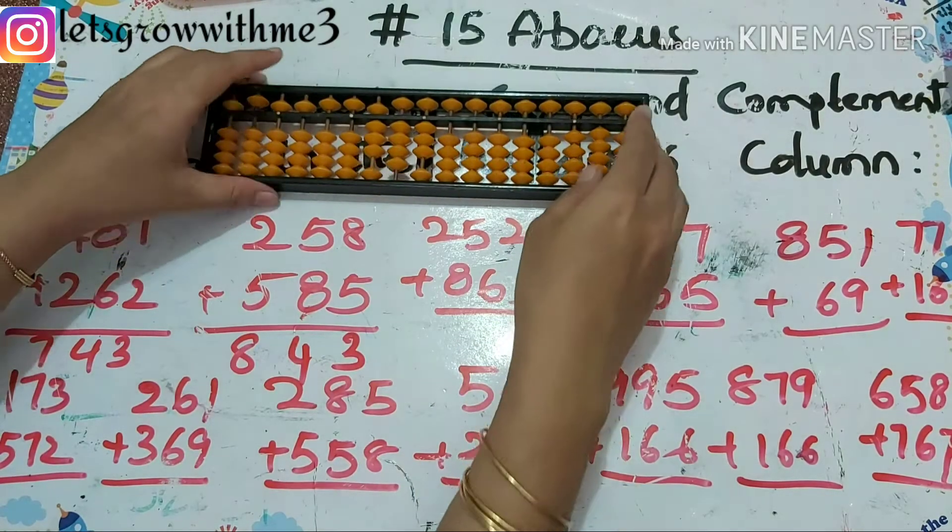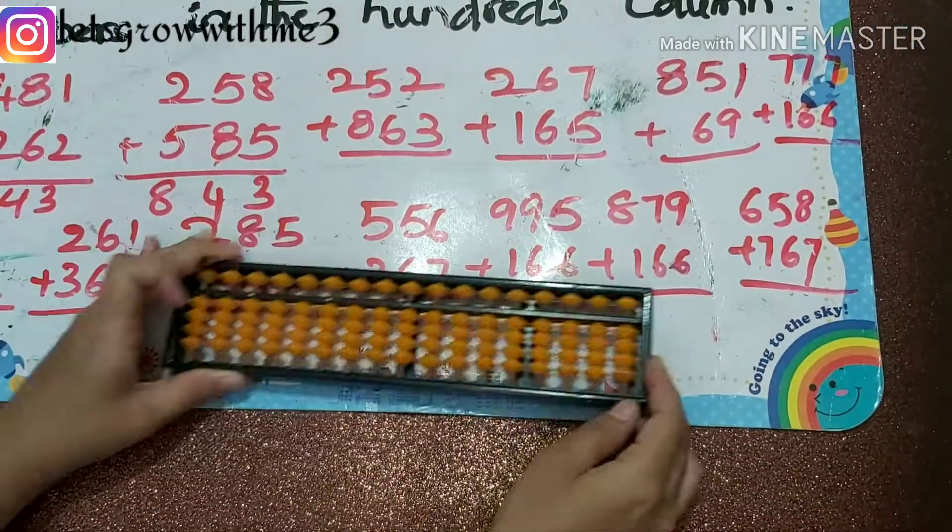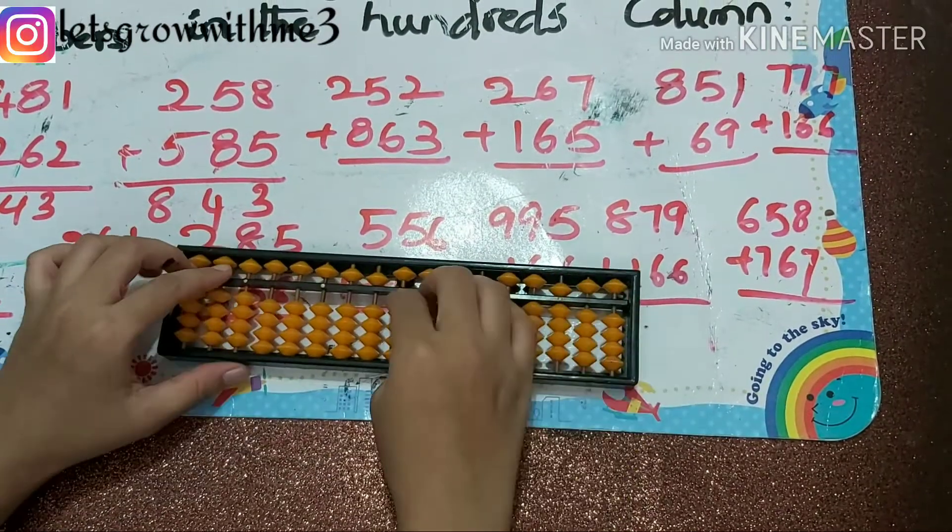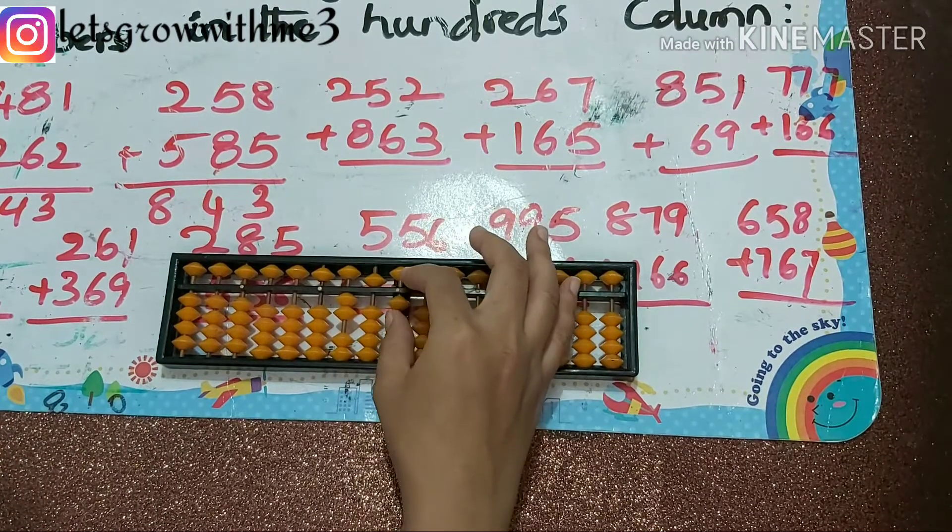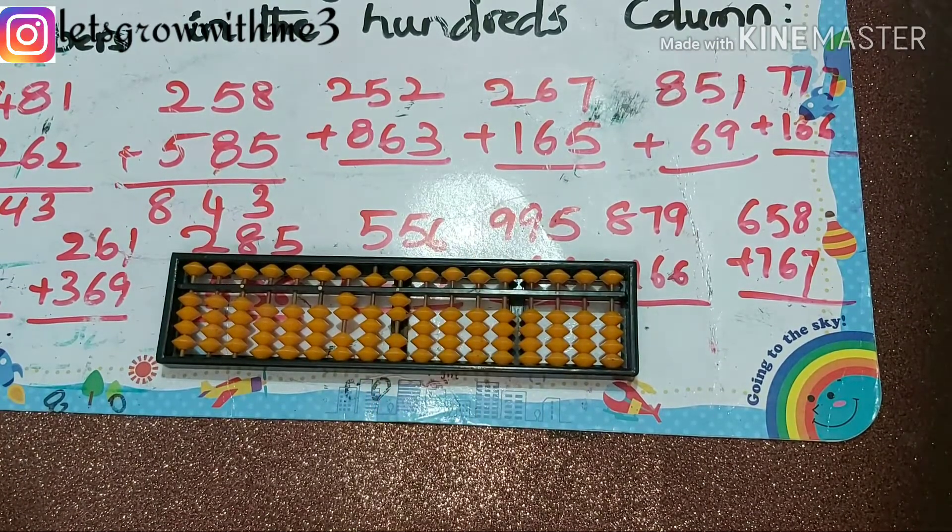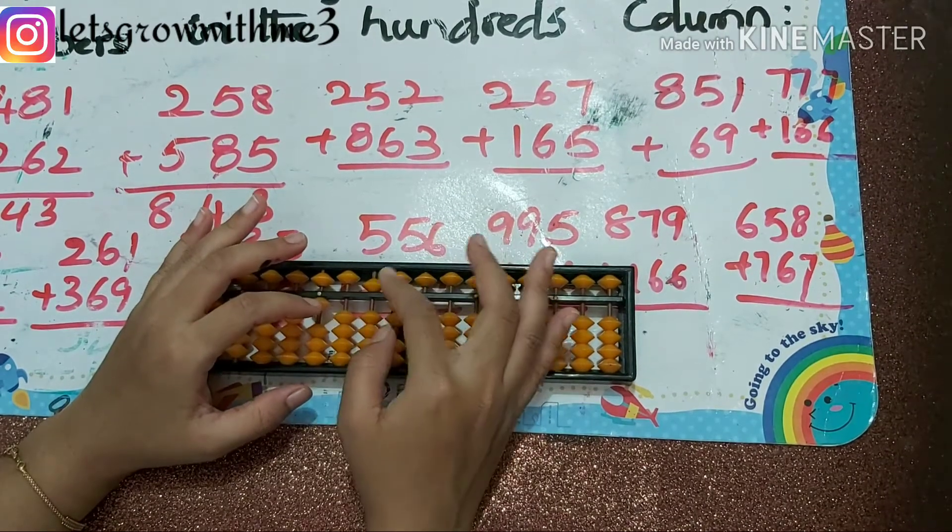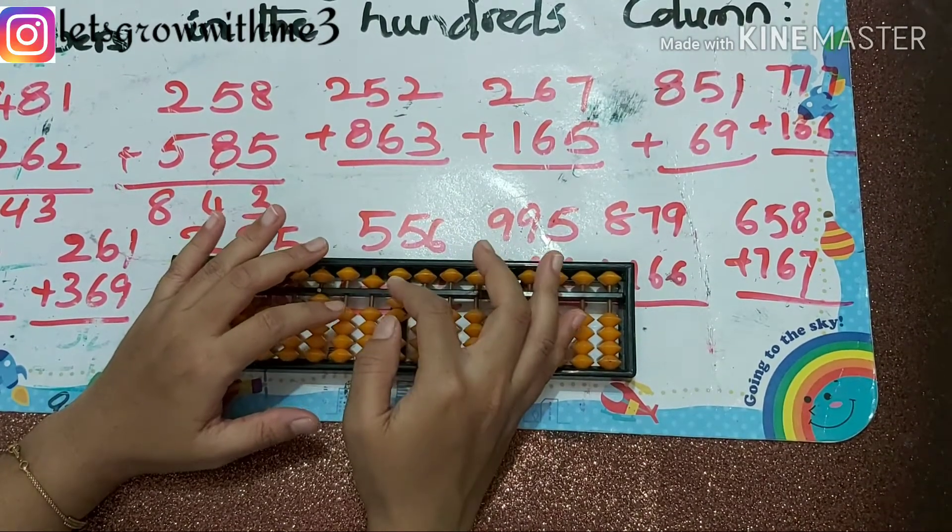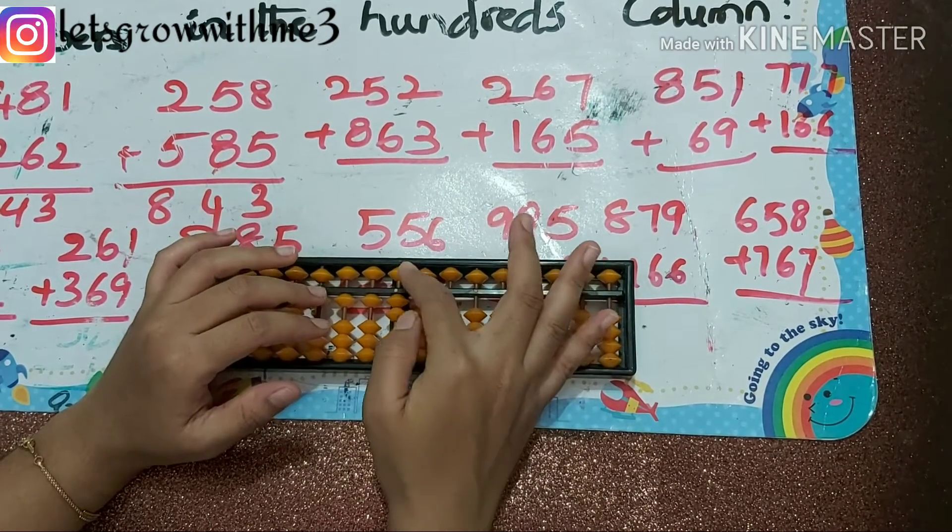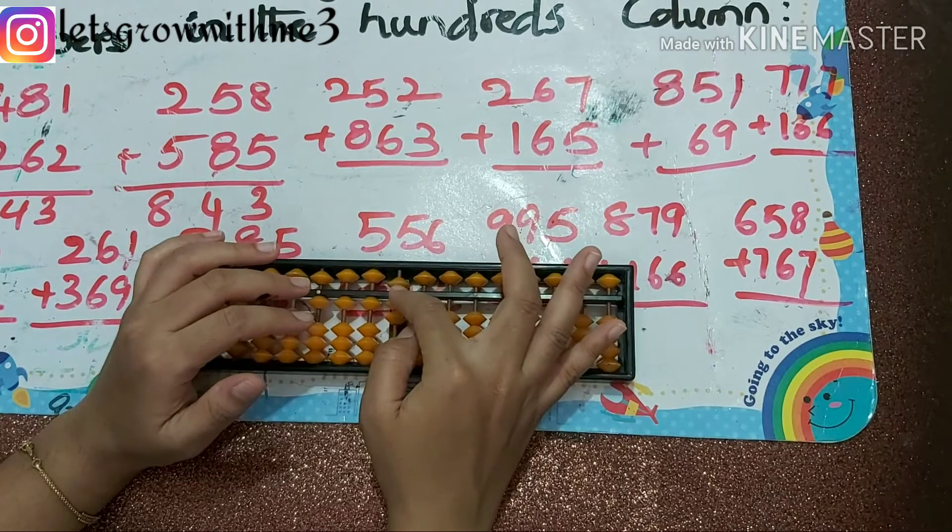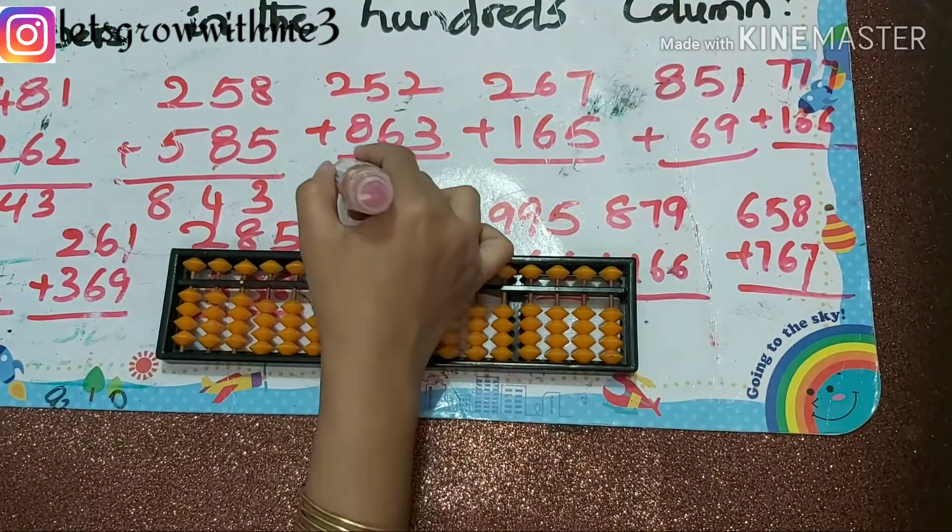Next one: 252 plus 863. Plus 10 minus 2, plus 6 papa, mama, babies up. And plus 3, plus 5, plus 3, plus 5 minus 2. So our answer is 1115.